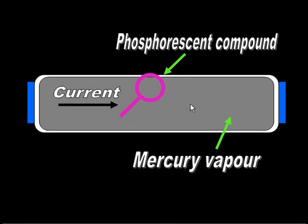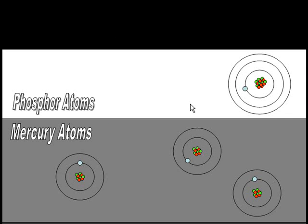If we zoom into a certain section, we can see that we've got the mercury vapour inside. On the inside of the glass is the phosphor atoms, and this is the outside of glass.